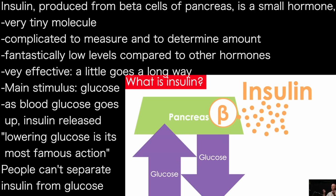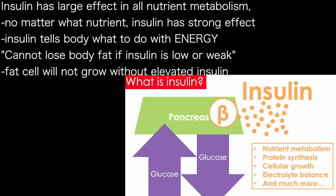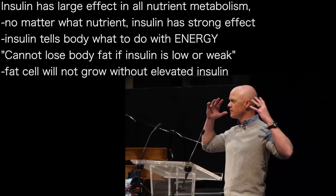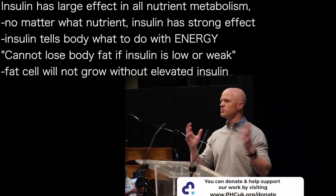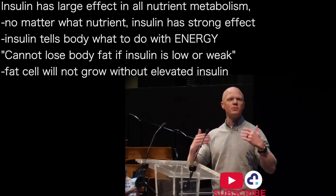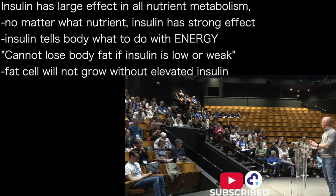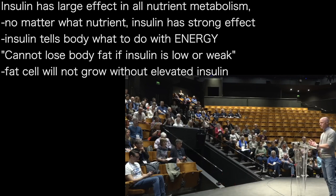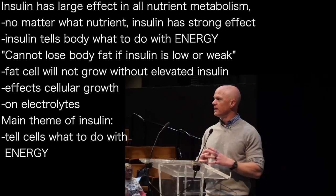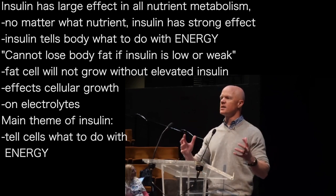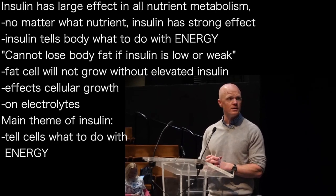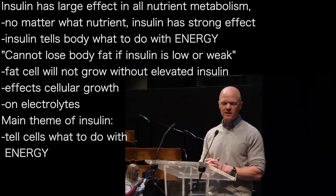People can't separate insulin from glucose, whereas glucose is yes, a stimulus and an effect — but insulin does many, many more things. It doesn't matter what the nutrient is; insulin has a powerful effect on what the body is doing with it. One of insulin's thematic effects across the entire body is to tell cells what to do with energy. You cannot lose fat if insulin isn't low — body fat is directly affected by insulin. It is impossible to make a fat cell grow without elevated insulin. It also has effects on cellular growth in a general way, and on electrolytes in a very important way, and many more effects. But the theme is telling cells what to do with energy, and the fact that it lowers glucose is just one of its many effects, albeit its most famous.